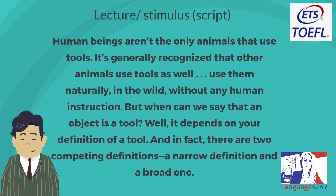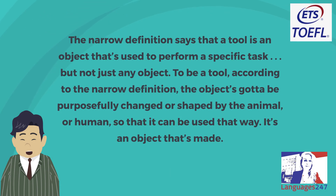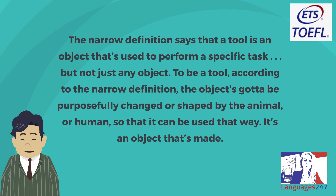'But when can we say that an object is a tool? Well, it depends on your definition of a tool. And in fact, there are two competing definitions: a narrow definition and a broad one. The narrow definition says that a tool is an object used to perform a specific task — but not just any object. To be a tool under the narrow definition, the object has to be purposefully changed or shaped by the animal or human so that it can be used that way. It's an object that's made.'